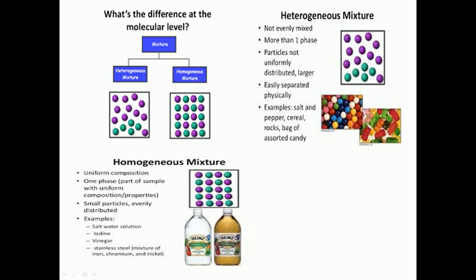Homogeneous mixtures have uniform compositions. All parts of the sample have uniform composition and properties, with small particles evenly distributed. Examples are salt water solution, iodine, and stainless steel mixture of iron, chromium, and nickel.